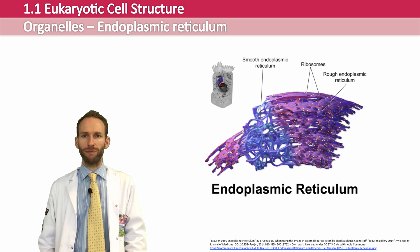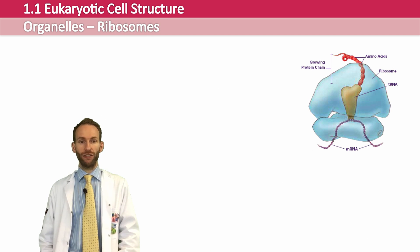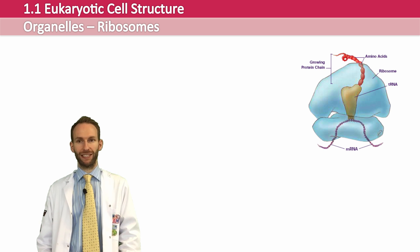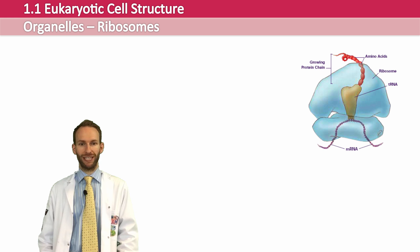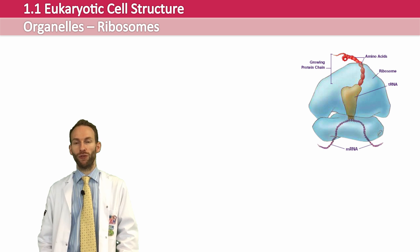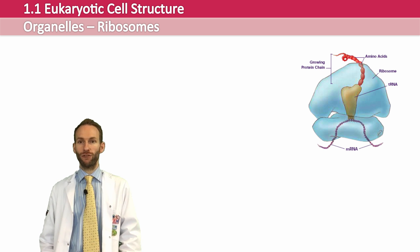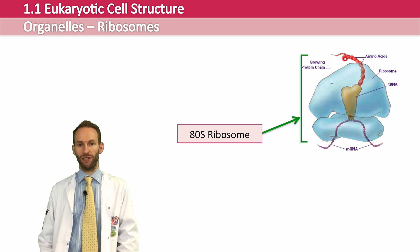Ribosomes are made of ribosomal RNA and protein. They are used in the process of protein synthesis — one of the most important functions a cell has. Ribosomes read the genetic code and assemble polypeptides that make up proteins. The ribosomes in eukaryotic cells are called 80S ribosomes, made up of two smaller subunits: a 60S subunit and a 40S subunit.